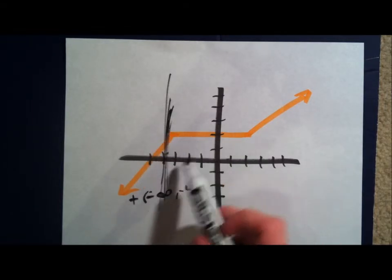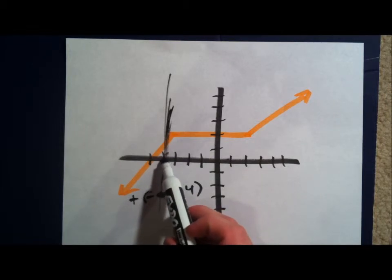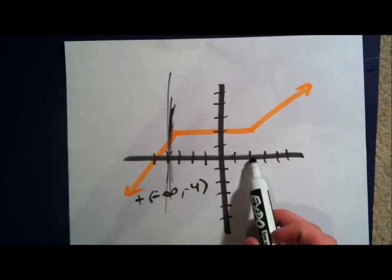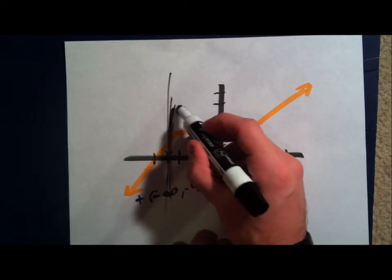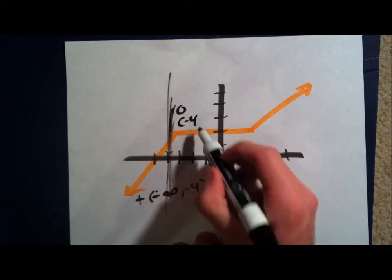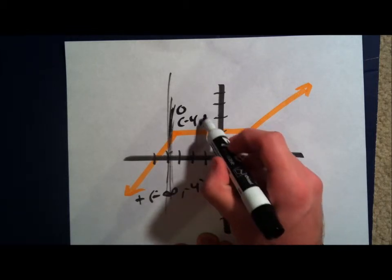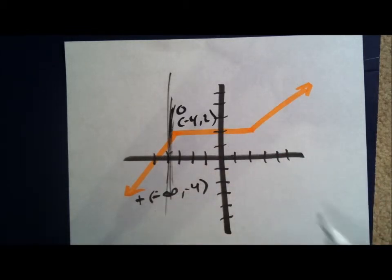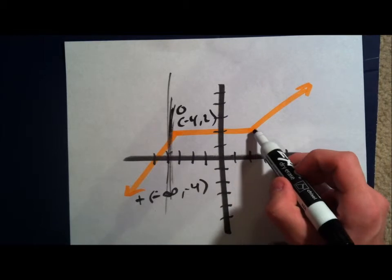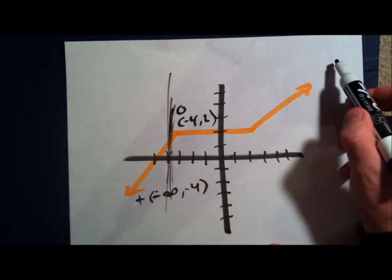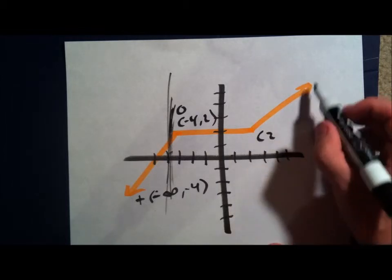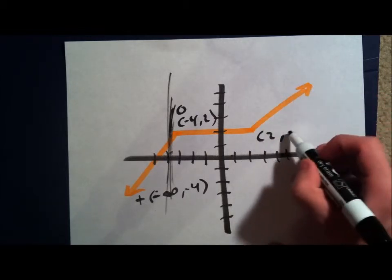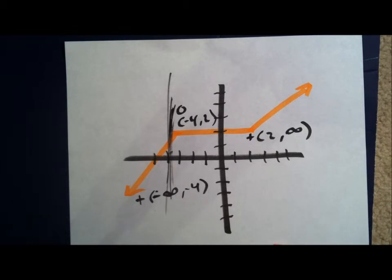So, you have a positive increase from negative infinity to negative four. Now, as you see right here, from negative four all the way to positive two, there is no increase. So, we write exactly that. There is no increase from negative four all the way to positive two. And then right here, we can see the graph going up again, starting at point two, going positive slope all the way to infinity.